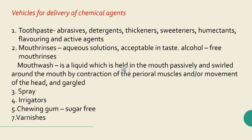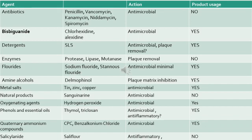Apart from the previous classifications, antimicrobial or chemical plaque control agents have also been classified based on their contents. An easy way to remember this is alphabetical order A, B, C, D, E. First, antibiotics — comprising penicillin, vancomycin, kanamycin, nidamycin, and sparamycin — had antimicrobial action but are no longer used as chemical plaque control agents. The next 'A' is amine alcohols, wherein delmopinol acts mainly on plaque matrix inhibition, but due to toxic side effects on oral cavity cells it is used to a very limited extent.